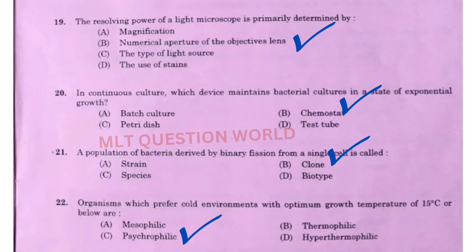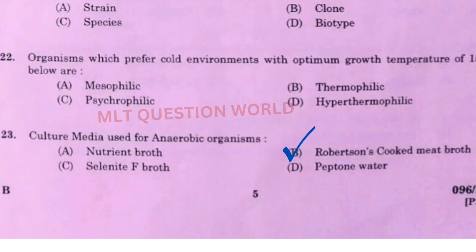Next question: A population of bacteria derived by binary fission from a single cell is called option B, clone. Next question: An organism which prefers cold environments with optimum growth temperature at 15 degrees Celsius is option C, psychrophilic. Next question: Culture media used for anaerobic organisms — the right answer is option B, Robertson cooked meat broth.